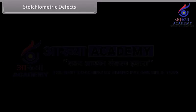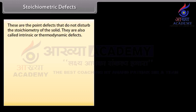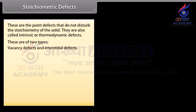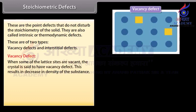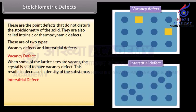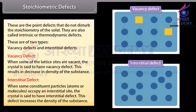Stoichiometric defects are point defects that do not disturb the stoichiometry of the solid. They are also called intrinsic or thermodynamic defects and are of two types: 1. Vacancy defect — when some lattice sites are vacant, resulting in a decrease in density; and 2. Interstitial defect — when some constituent particles occupy an interstitial site, increasing the density of the substance.